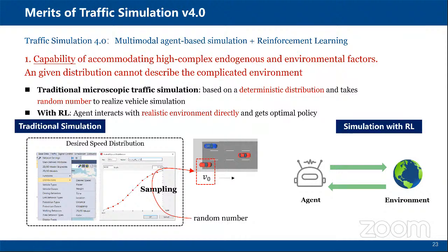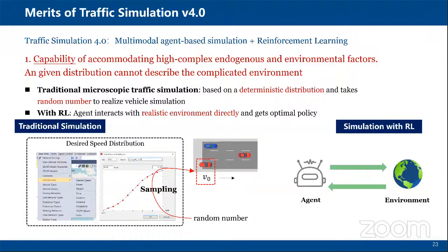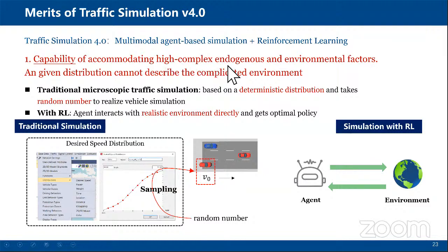Combining all these ingredients together gives us a clear plan for traffic simulation 4.0, which I term as multi-modal agent-based simulation incorporating reinforcement learning. The advantages of traffic simulation 4.0: number one, it is capable of accommodating highly complex endogenous and environmental factors. Previous state-of-the-shelf simulation packages produce inaccurate outcomes. Compared with other types of simulation — such as hydrodynamic simulation or building construction simulation where outcomes closely match practical data — traffic simulation in all existing versions 1.0 through 3.0 is not accurate. A very important reason is that it is not able to handle all the endogenous and environmental factors.